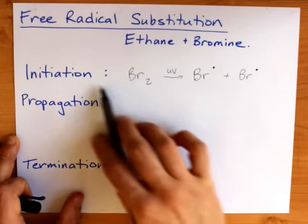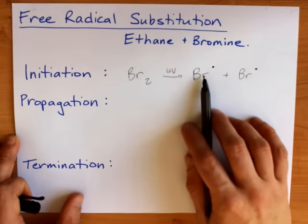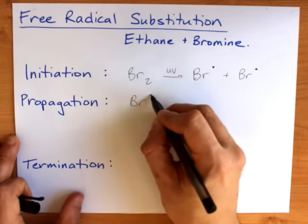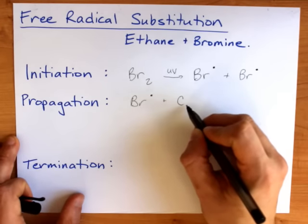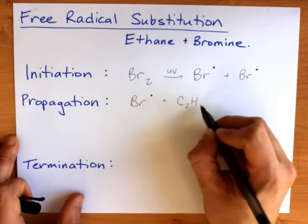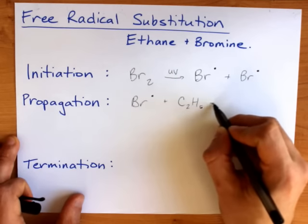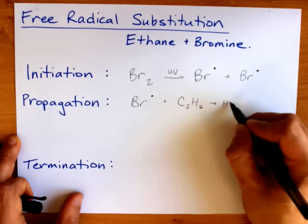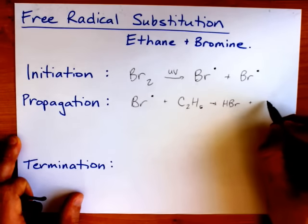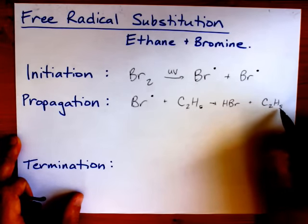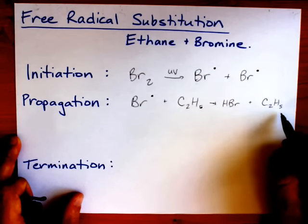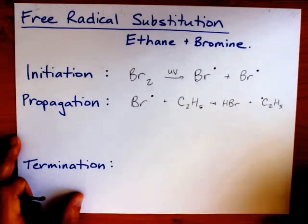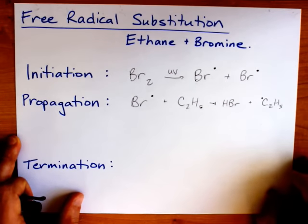The first step of propagation, or what happens to these Br's, is that these Br radicals will react with the ethane, which I'm going to write here as C2H6, and steal a hydrogen. That gives you HBr, and it leaves you with C2H5. One of the hydrogens is gone, and the carbon is left with an unpaired electron.